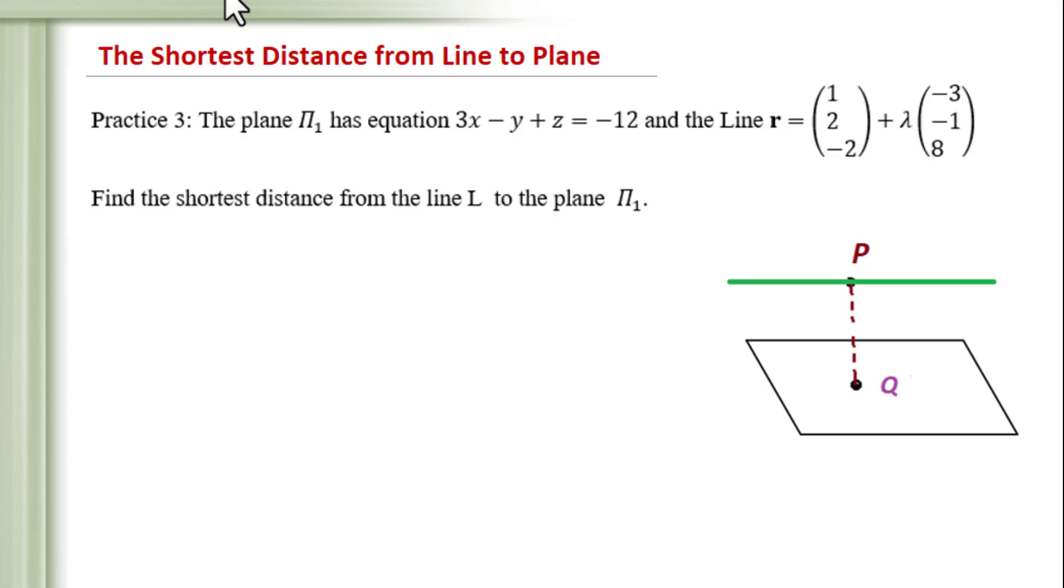This video is about the shortest distance from line to plane. The plane pi1 has equation 3x minus y plus z equals negative 12, and the line L has equation r equals (1, 2, -2) plus lambda (-3, -1, 8). Find the shortest distance from the line L to the plane pi1.